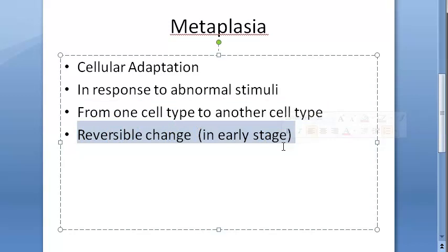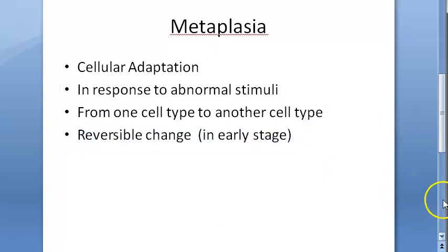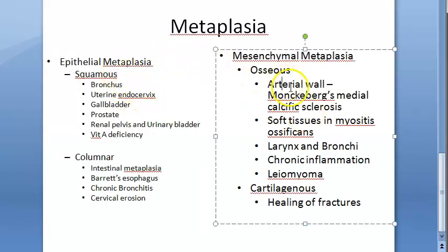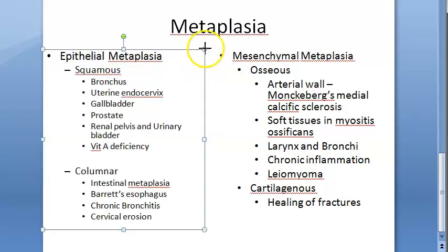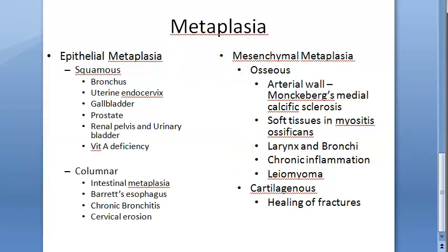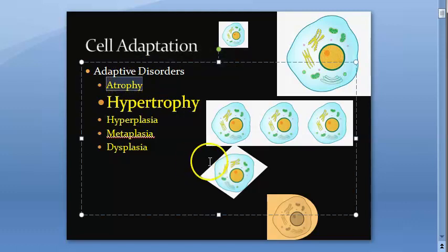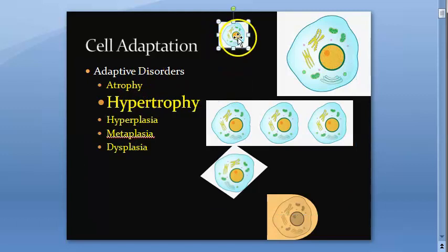Metaplasia is reversible in the early stage; in the later stage it can become carcinoma and become irreversible. There are two types of metaplasia: epithelial metaplasia and mesenchymal metaplasia. Looking at cellular adaptation overall, there are many types: atrophy, hypertrophy, hyperplasia, metaplasia, and dysplasia.